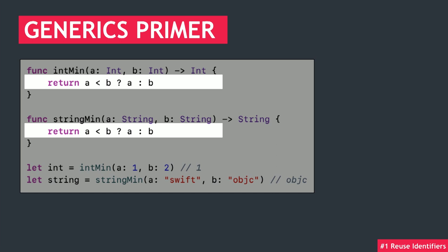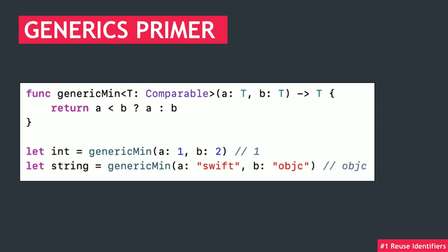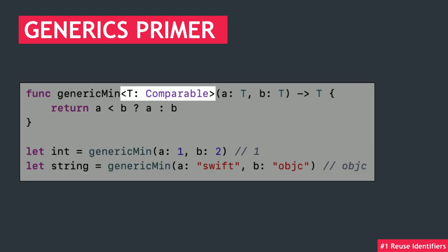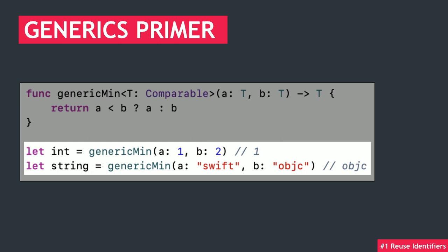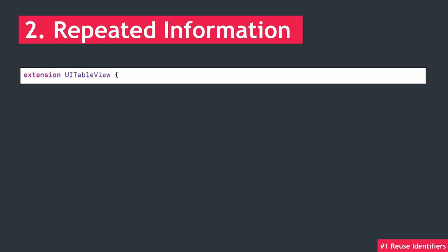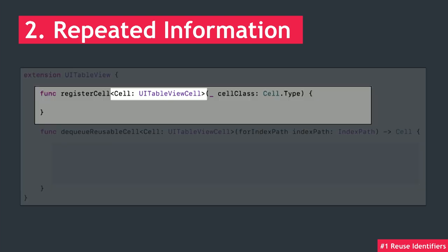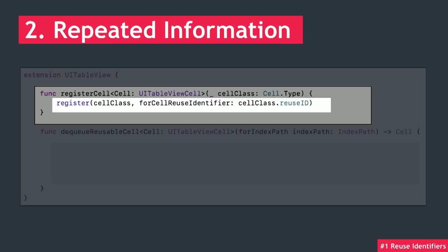We can create a new function called genericMin and tell it we're going to use a generic type T that conforms to Comparable in angle brackets. The parameters it takes in are now also of type T, as is the return value. Now we can apply this function to any two pairs of comparable types, like integers and strings. Applying this to our table view: we can extend the base UITableView class with two new functions, one for registering the cell and one for dequeuing it. Our new register function takes in a generic type cell constrained to UITableViewCell, and the parameter we pass is the type of the class. Then in the body, we simply call the table view's register function and pass our cell type's reuse ID.